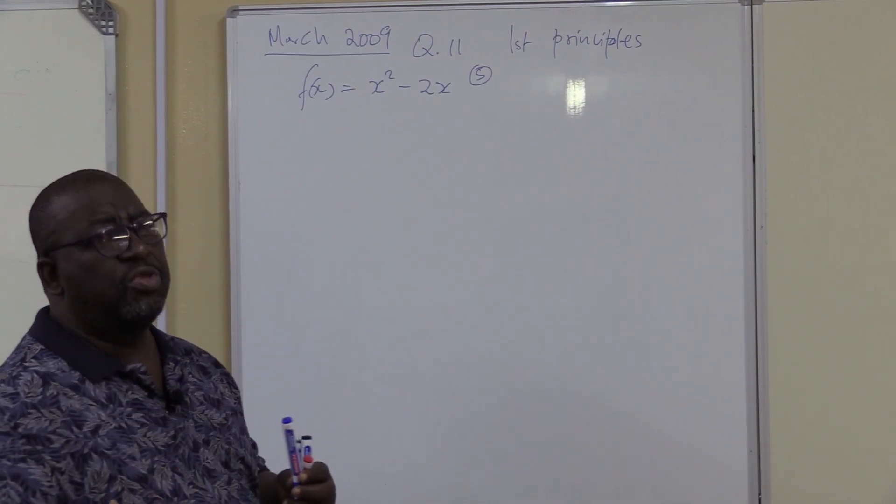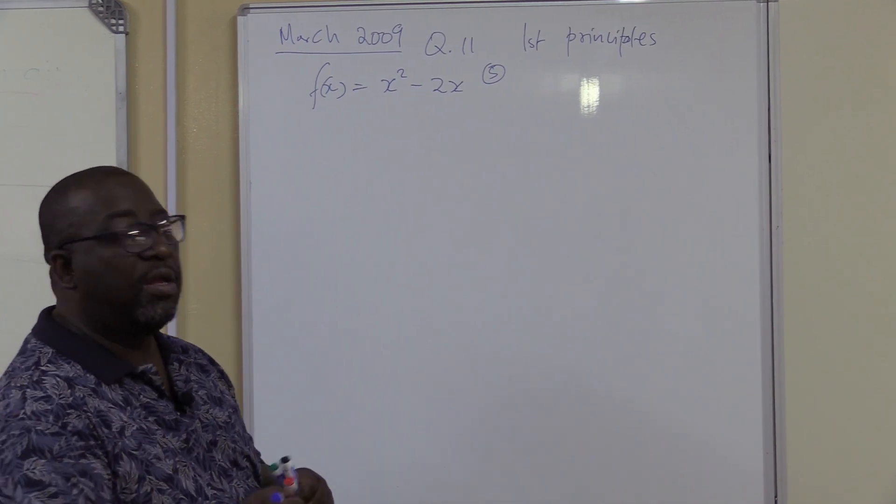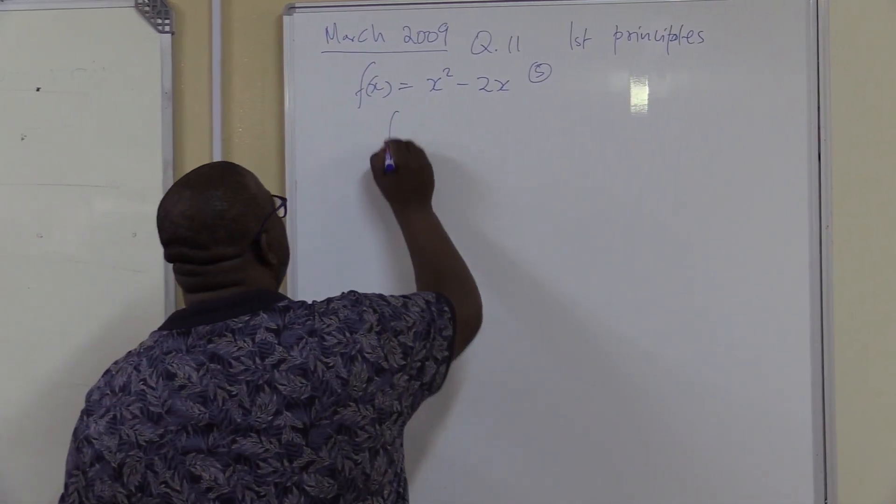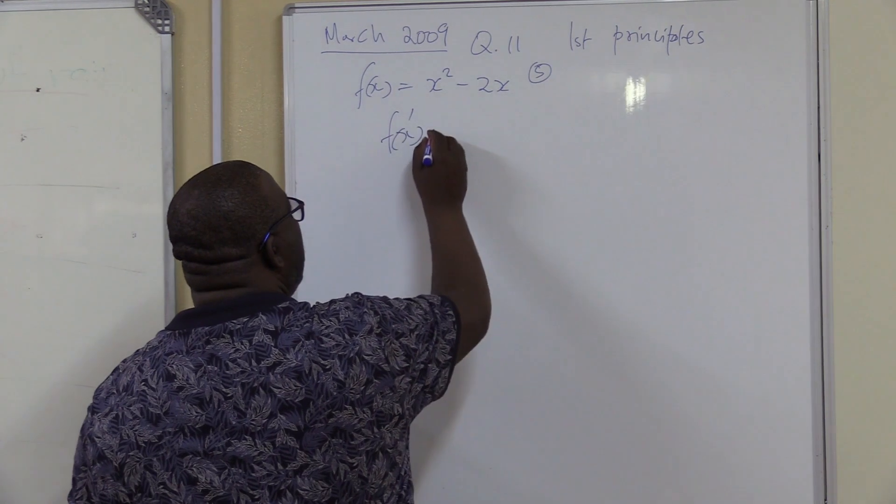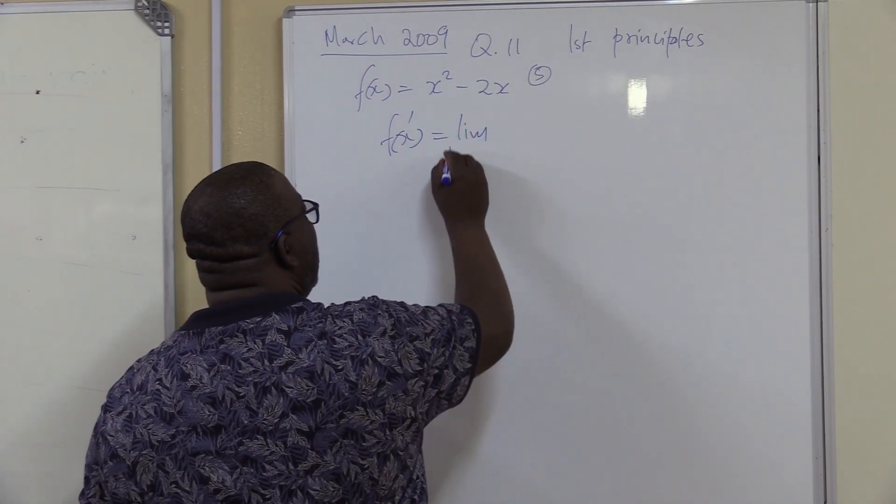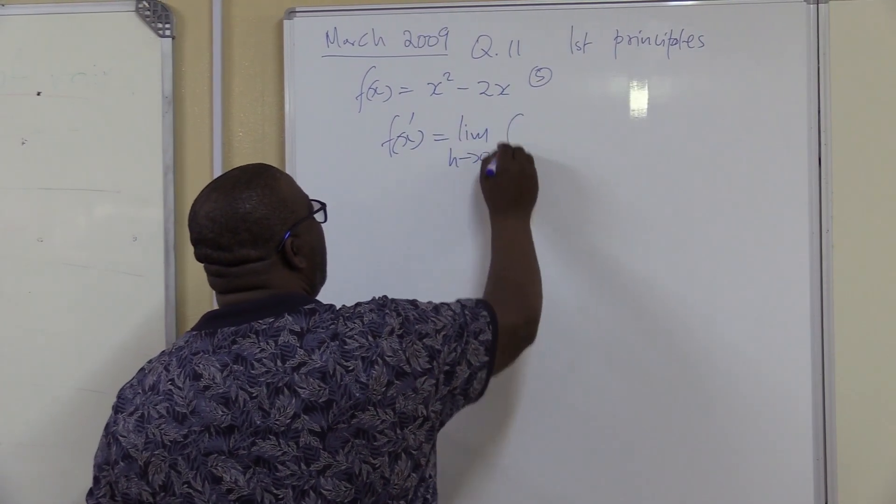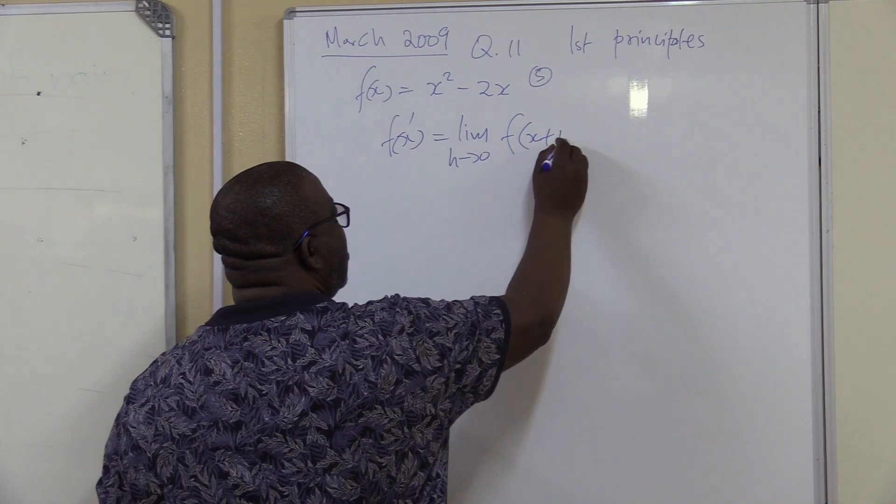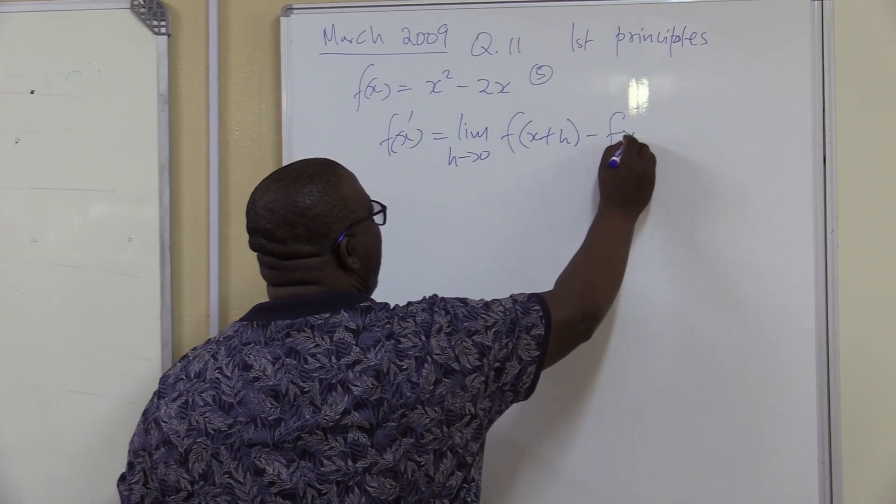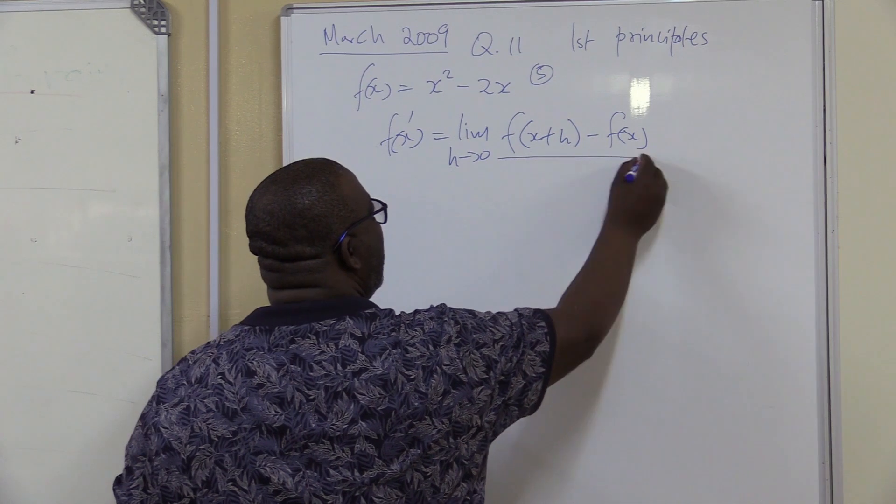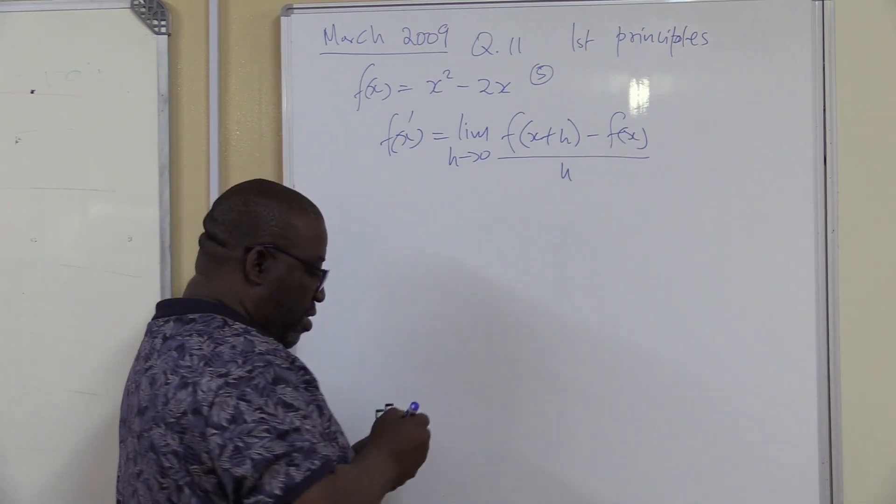This is what we have. The first thing that we do is write the correct formula. It has a mark. So f'(x) equals the limit as h tends to 0 of [f(x+h) - f(x)]/h. You get a mark for writing the correct formula.